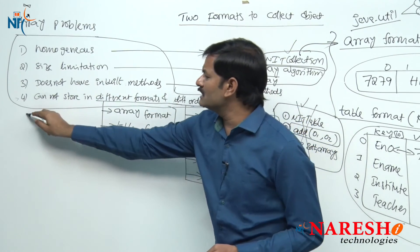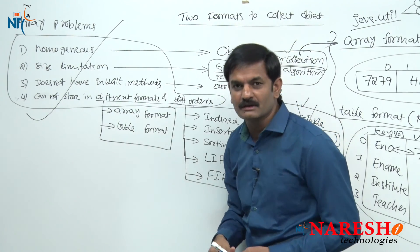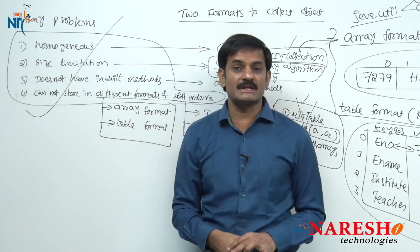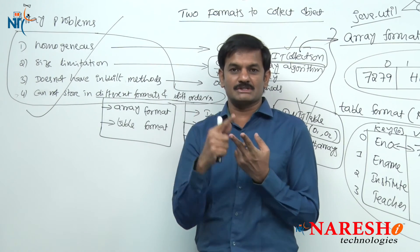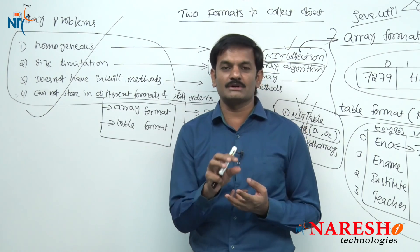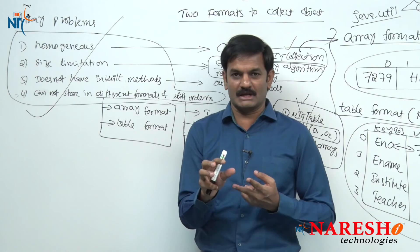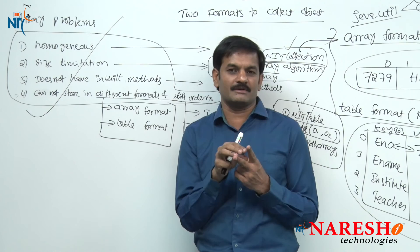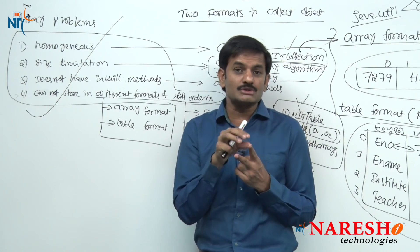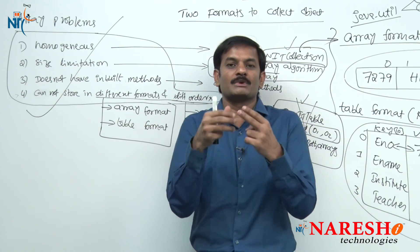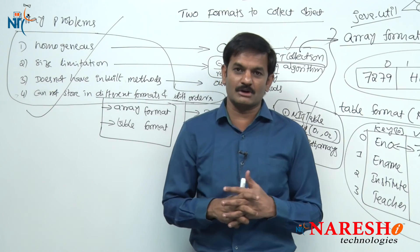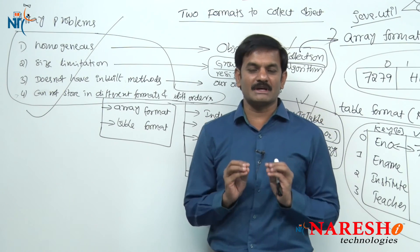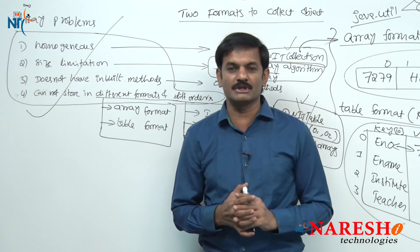All four problem solutions are initially given by two classes: Vector and HashTable. First we will work with Vector and HashTable classes and identify any problems that exist in them. To solve those problems, many other classes are introduced in the collections framework as part of Java 1.2. I hope you got a good idea on today's topic.